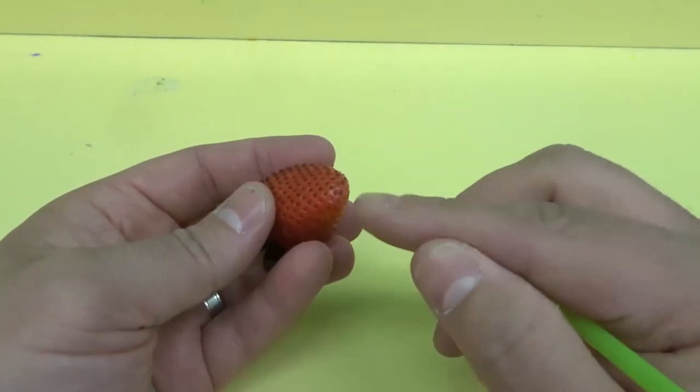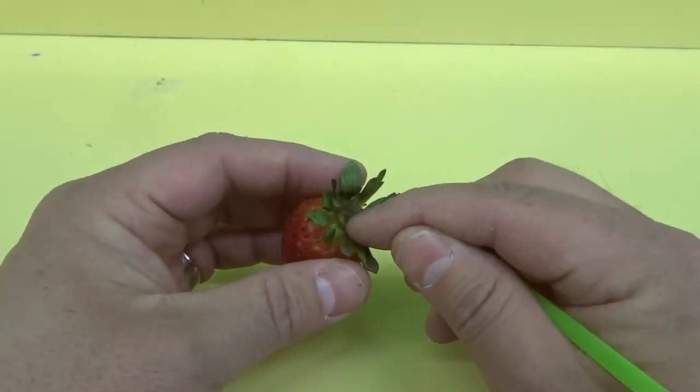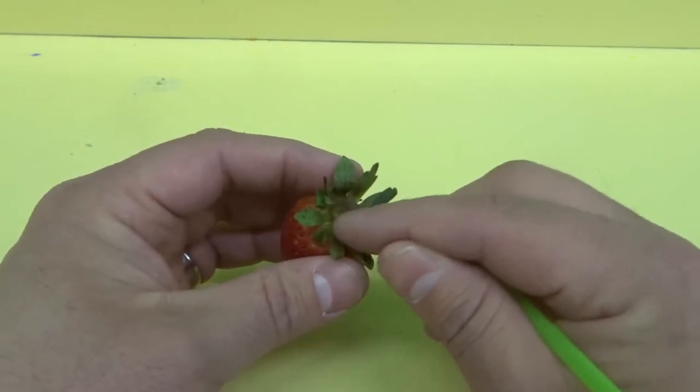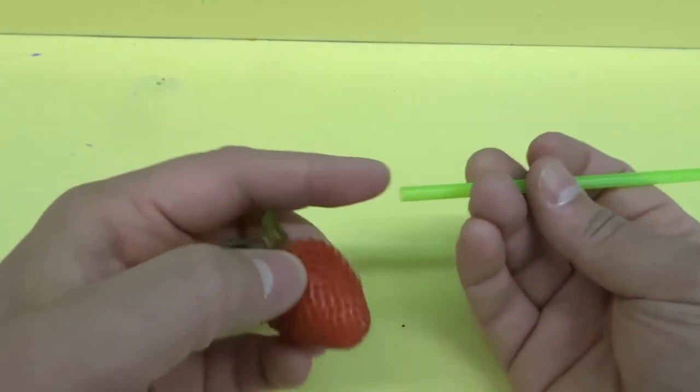But what you want to do is start from the bottom. A lot of people try and start from the top and they're trying to get through this thick stem. And it's really hard to get through, especially with a straw.